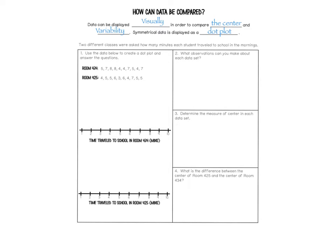So room 434 has values: 5, so I'm going to put a dot on 5; then 5, 7, 8, 8, 8, 4, 4, 7, 5, 4, 7.